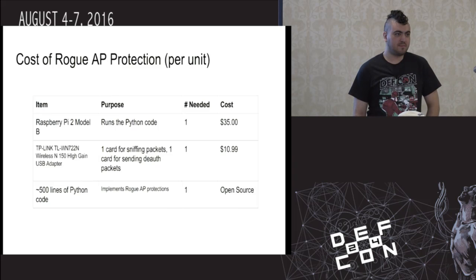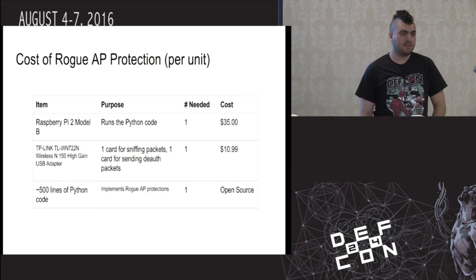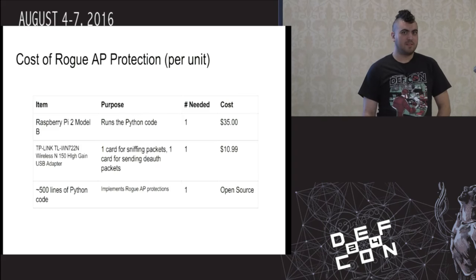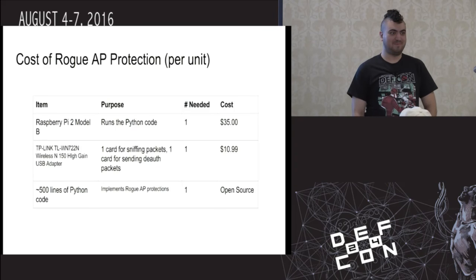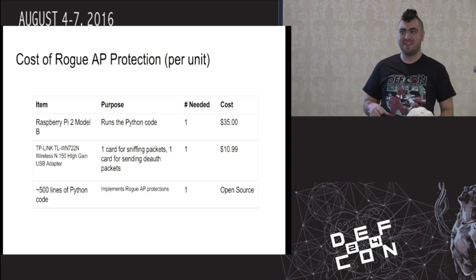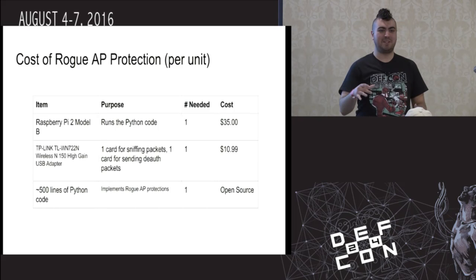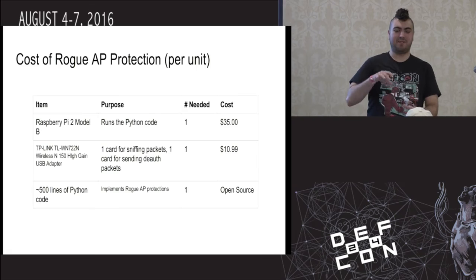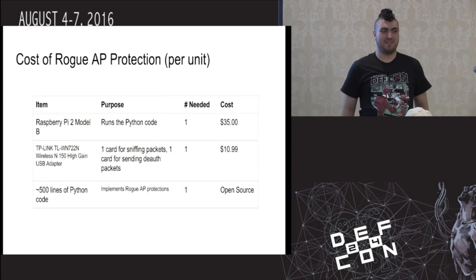Another suggestion: what about sending a known good packet from the wired side of the network and then listening for that packet to know the transmit value? That's also a really good idea. You can listen for the packet you just sent out and record that. This is an open source project, so if you want to add that feature, feel free to contribute.